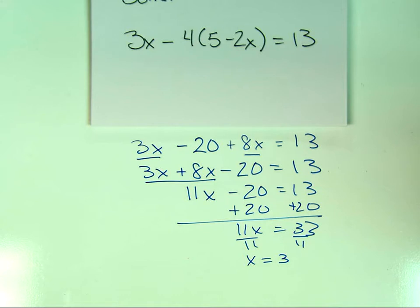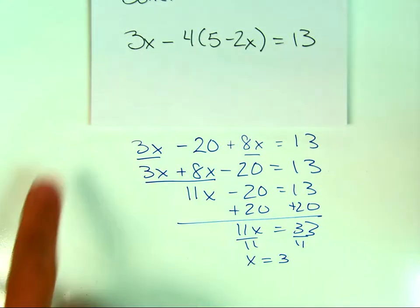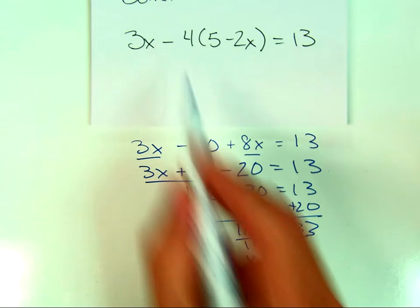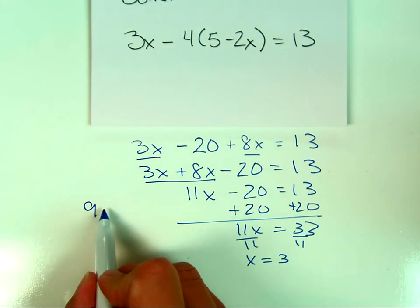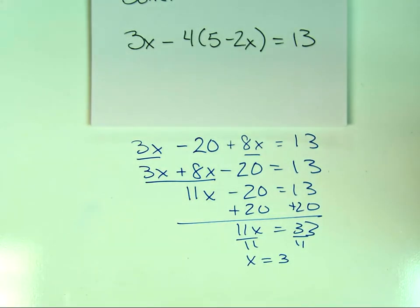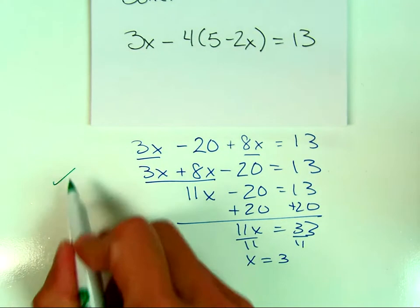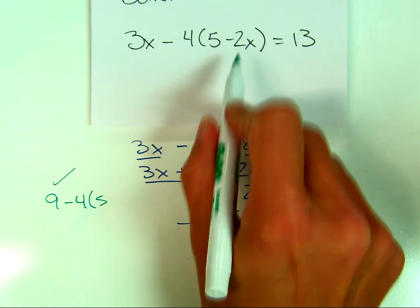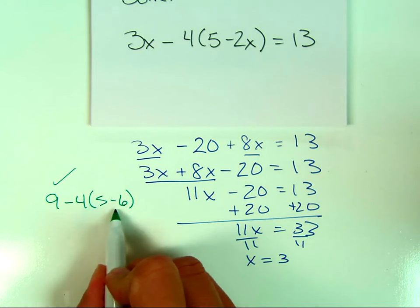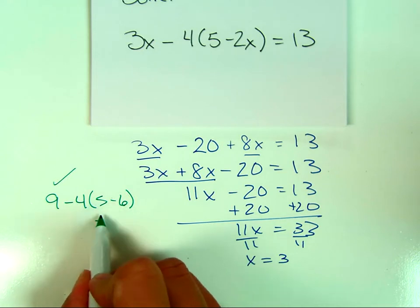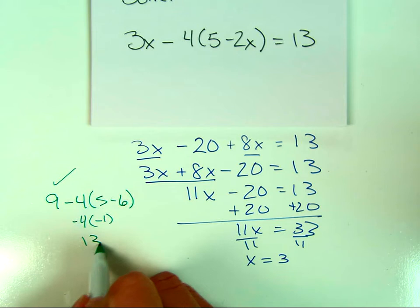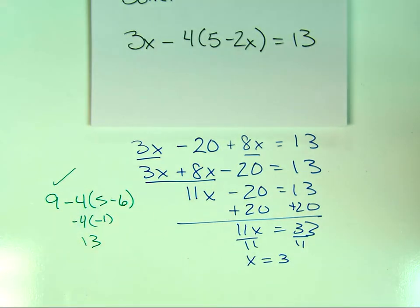On a test, plug the answer back in to check. Substituting x equals 3: 3 times 3 is 9. Then negative 4 times the quantity (3 times 2 minus 6) — that's negative 4 times negative 1, which is 4. So 9 plus 4 equals 13. That confirms x equals 3 is correct.